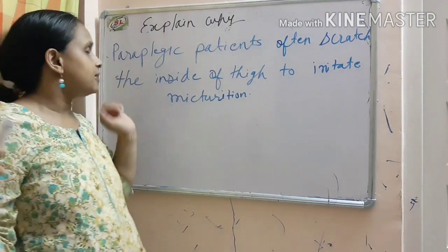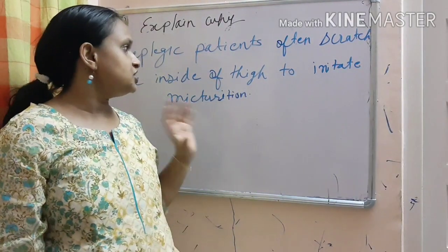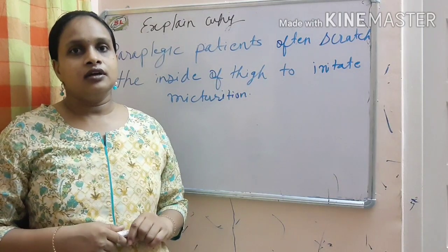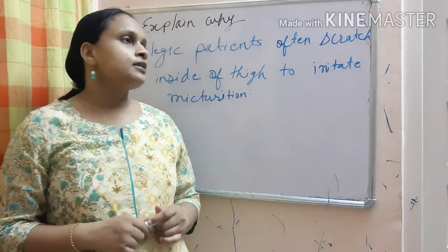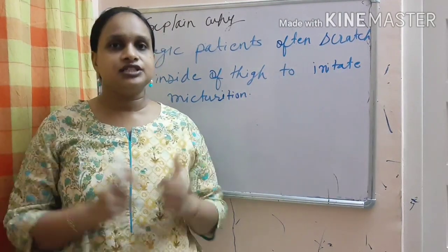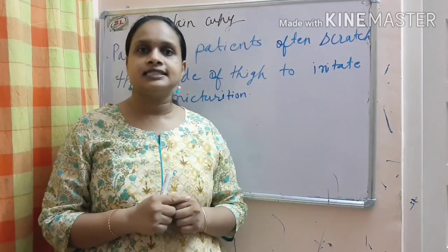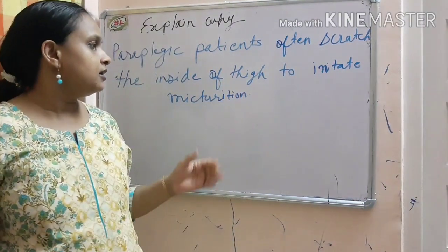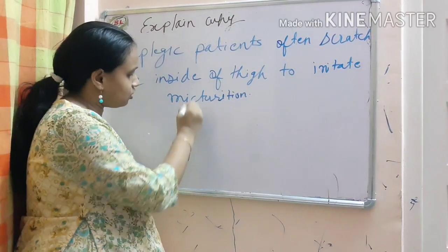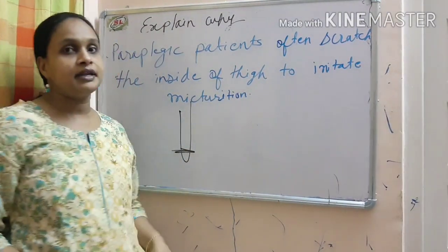So, in paraplegia, there is initiation of micturition. First of all, tell me, paraplegia occurs in which condition? Paraplegia occurs in spinal cord injury. If the injury to the spinal cord at the lower level, there can be paraplegia.